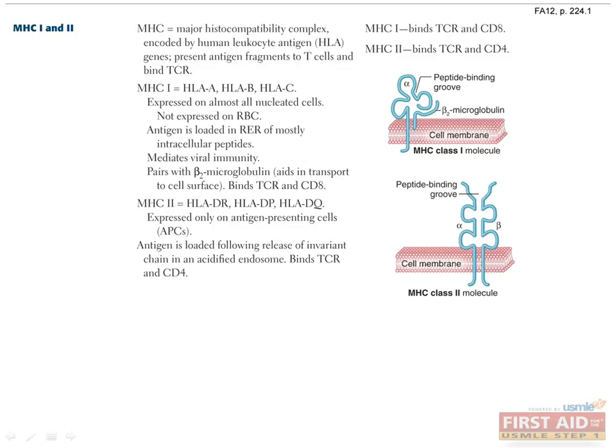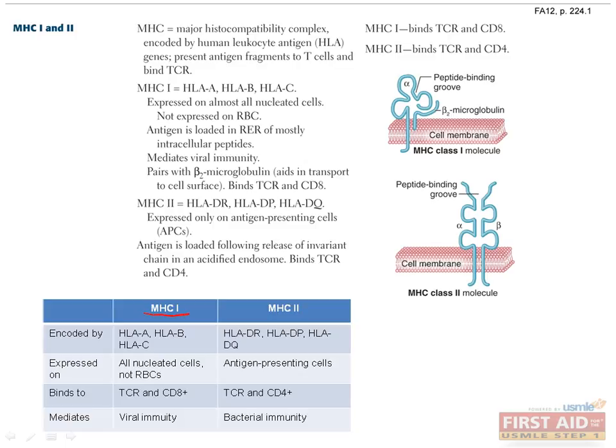Let's look at these in a table. MHC1 is encoded for by the HLA-A, B, and C genes and is expressed on almost all nucleated cells. Red blood cells are non-nucleated and hence do not express this molecule. MHC1 typically presents antigen from intracellular pathogens and is the primary mediator of viral immunity. The MHC antigen complex binds the T cell receptor on CD8 cells, thus stimulating immunologic response to viruses.